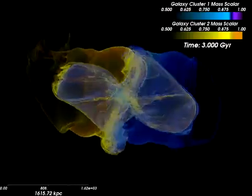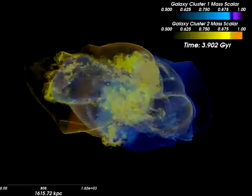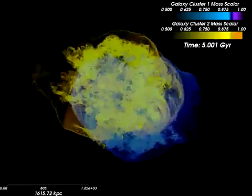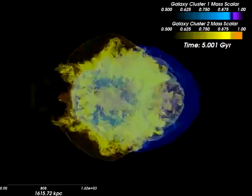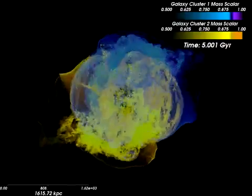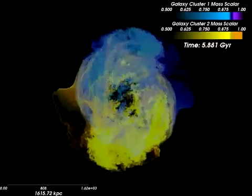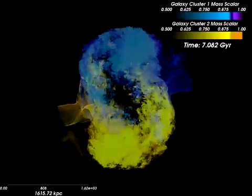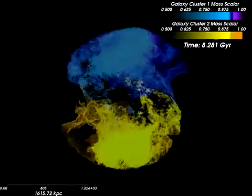Large features such as plumes and bridges form during the course of the merger as the gas is dragged along under the gravitational influence of the dark matter. The orbital motion of the two clusters stirs the intracluster medium, driving turbulent motions and heating up the gas further.